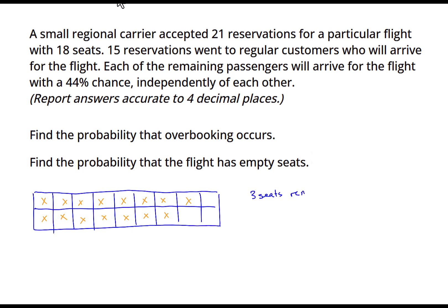Now, if 21 reservations were made for the flight, but 15 people have already showed up, that leaves six people left over to show up. Six people remain to show up for the flight. This is where we start seeing the binomial probabilities - of these six people, there's a 44% chance that any one of these six people will show up. So for this first seat, there's a 44% chance that a person will show up for it and so forth.